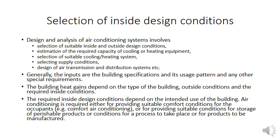Supply conditions vary based on use: for human occupancy the condition will be different; for goods, fruits, vegetables, or perishable items it will be different again. The supply condition is fixed according to the requirement. Then comes the design of the air transmission and distribution system — this includes the complete duct design from where the cooled air is generated and circulated to the particular space.